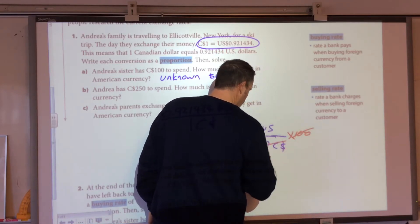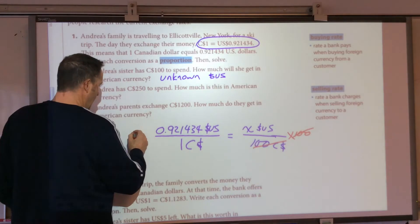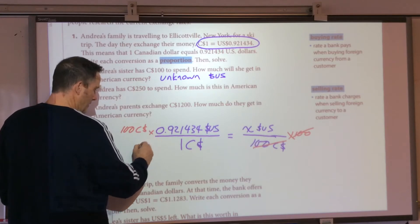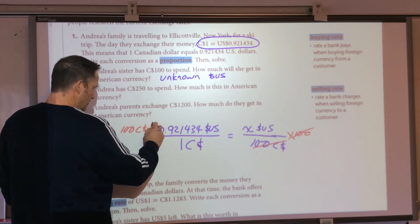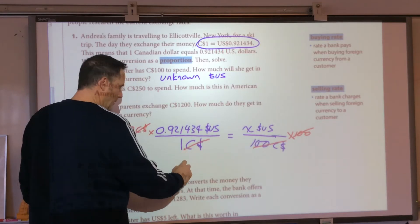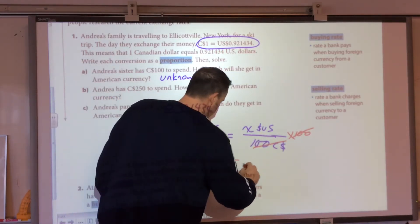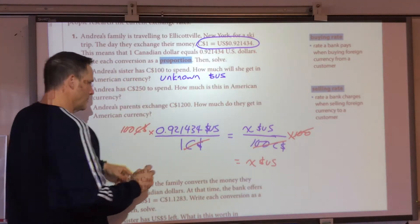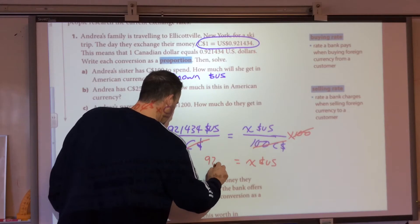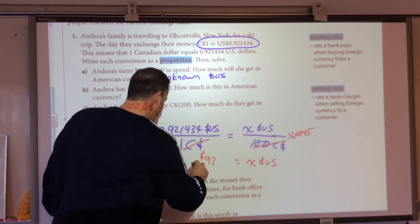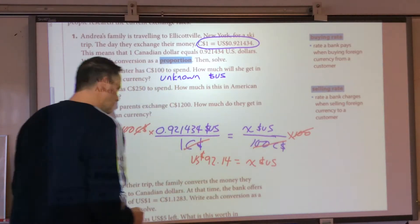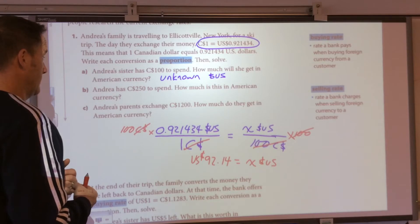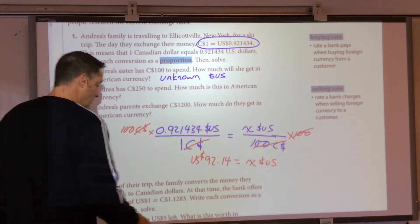Now, I've got to get X by itself. It's pretty straightforward. We're going to multiply both sides by 100. X US dollars is going to equal 100 times 0.921434, which equals $92.14 US.